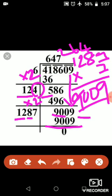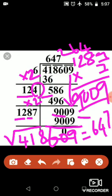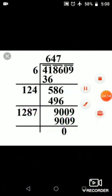9009 minus 9009 we get the answer 0. Therefore square root of 4 lakh 18609 answer is 647. When we understand, thank you my dear students, thank you all.